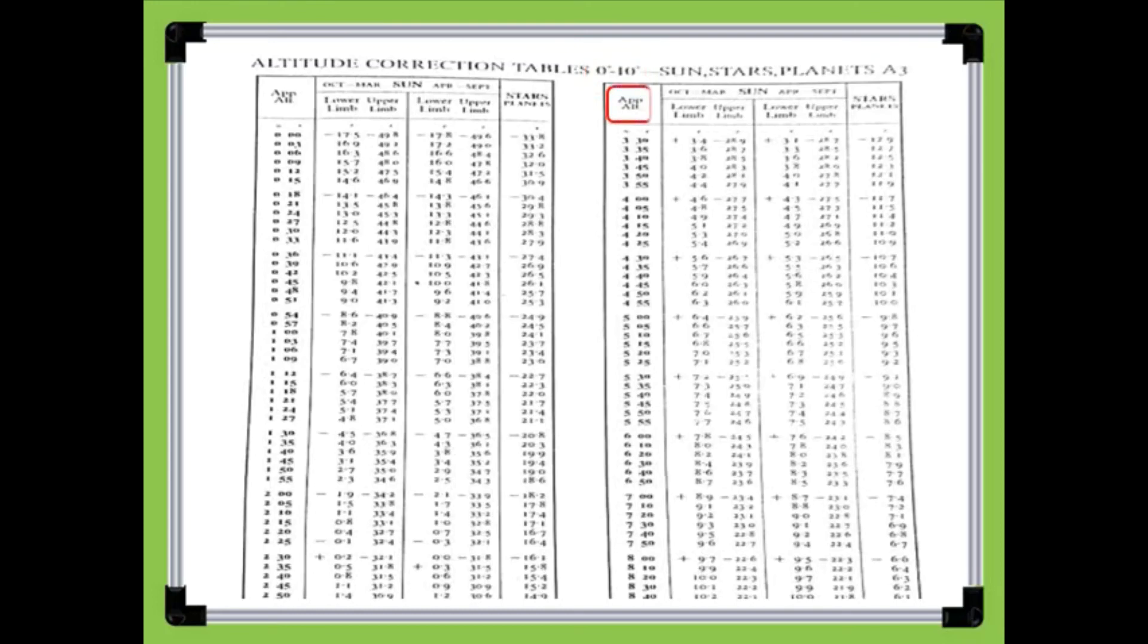Locate the apparent altitude column. Move down until 8 degrees and 30 minutes of altitude is found. Move to the right to the stars and planets correction column, move down, then the corresponding value will be found.